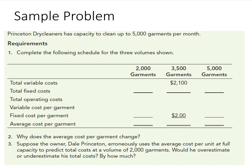We have a sample problem here that will allow us to apply what we know about cost behavior. Princeton Dry Cleaners has capacity to clean up to 5,000 garments per month, and we need to complete the schedule for three volumes: 2,000 garments, 3,500 garments, and 5,000 garments. Let's go ahead and fill it in.